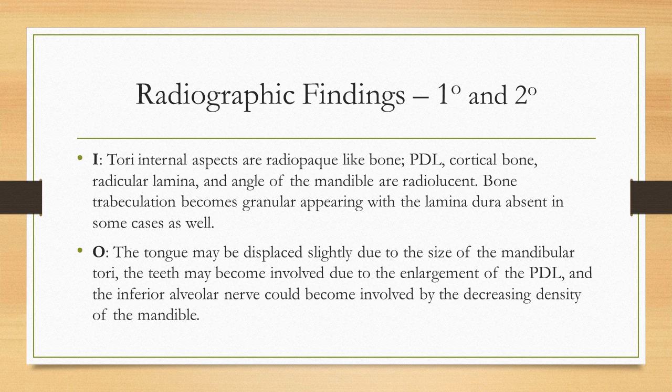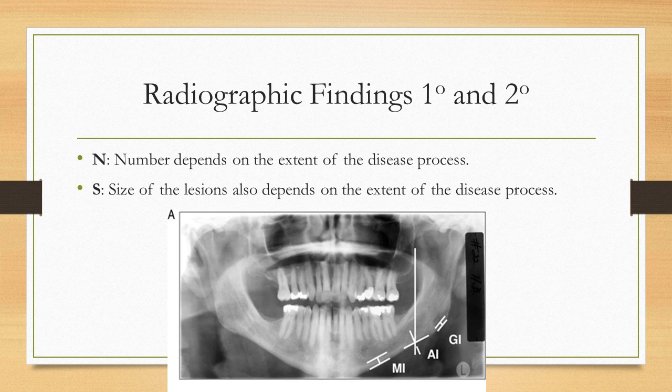O: Other. The tongue may be displaced slightly due to the size of the mandibular tori. The teeth may become involved due to the enlargement of the PDL, and the inferior alveolar nerve could become involved by the decreasing density of the mandible. N: Number. The number depends on the extent of the disease process. S: Size. Size of the lesions also depends on the extent of the disease process.